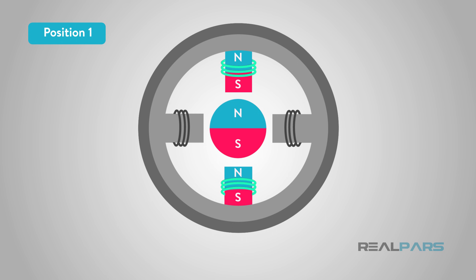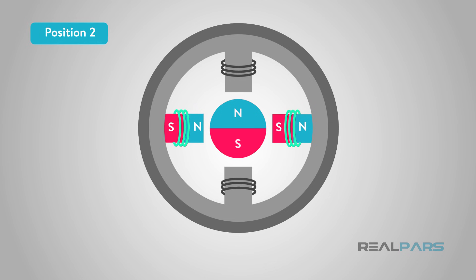Now, in order to move the stepper rotor clockwise, the top electromagnet pole is deactivated and the right electromagnet pole is activated causing the rotor to move 90 degrees clockwise and align with the active magnet as shown in position 2.